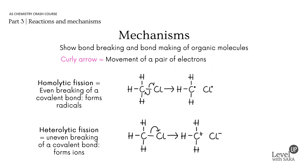There are two types of fission — fission meaning bonds breaking. This is exactly what mechanisms show: the bond breaking and bond making of organic molecules. A curly arrow shows this movement as the movement of a pair of electrons, and there is always a reason for the movement of these electrons.